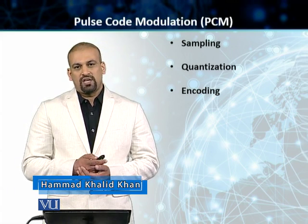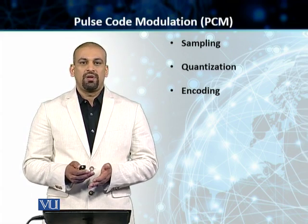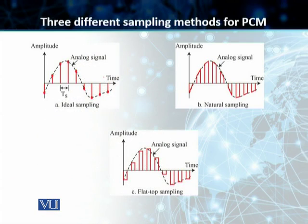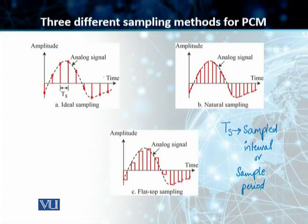We touched on sampling when I was explaining the process of PCM on a high level. We'll go into the next slide and talk about sampling in detail. There are three different sampling methods for PCM. You need to understand that TS is our sampling interval, or sampling period — basically the interval we will span before we take each individual sample.